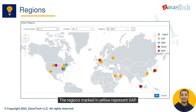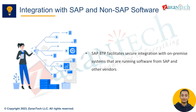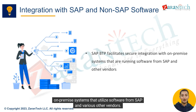The regions marked in yellow represent SAP BTP availability. SAP Business Technology Platform offers a robust solution for seamless and secure integration between on-premise systems that utilize software from SAP and various other vendors.